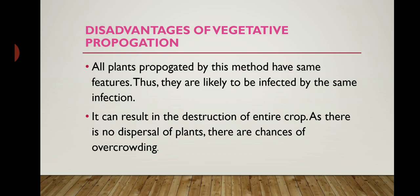There are certain disadvantages also. What are the disadvantages of vegetative propagation? All plants propagated by this method have the same features, thus they are likely to be infected by the same infection. If a parent plant has any kind of disease or infection, that same disease will be transferred to the new plant. The disease will be carried from the parent plant to the new plant — this is a disadvantage of this process.